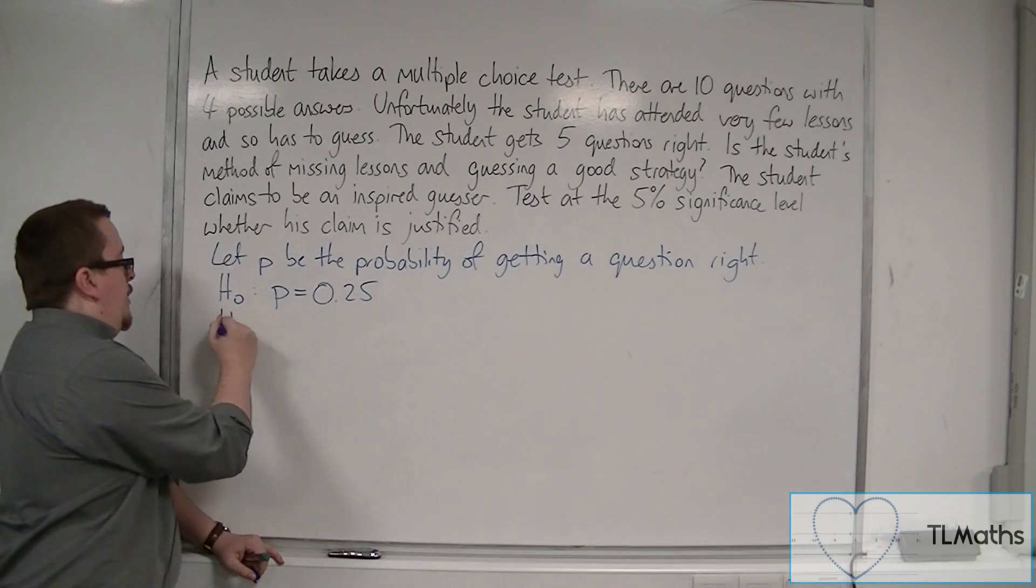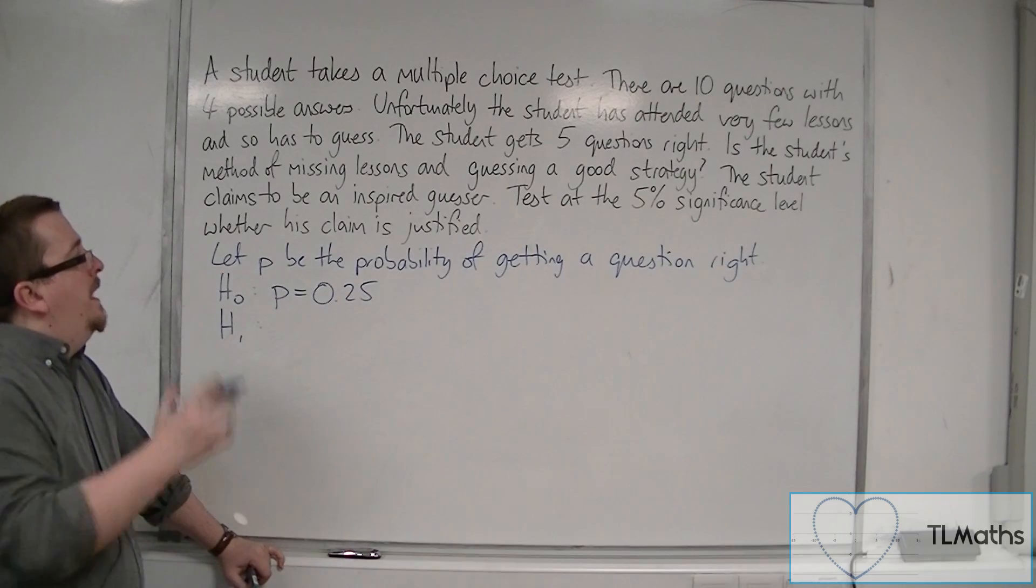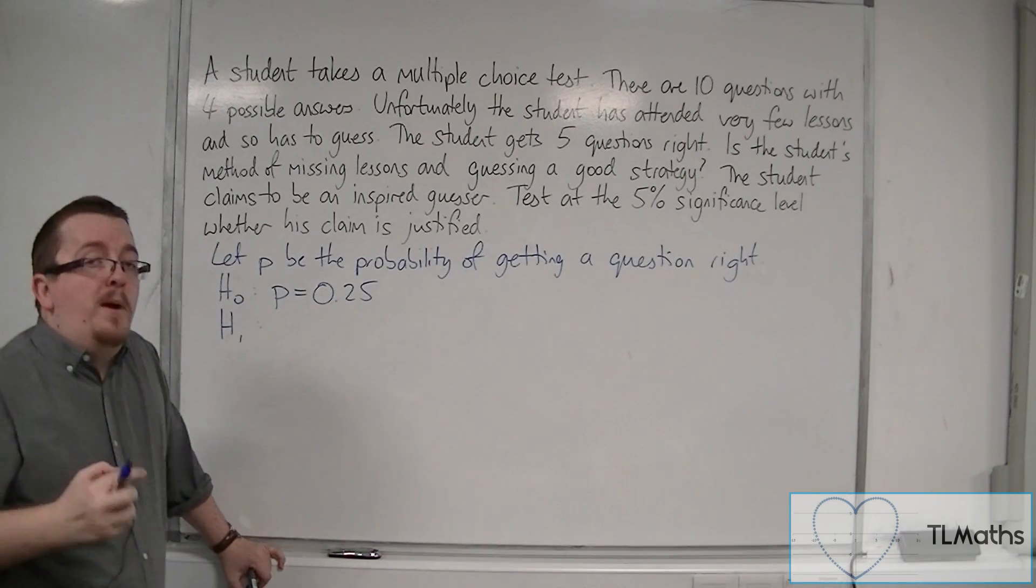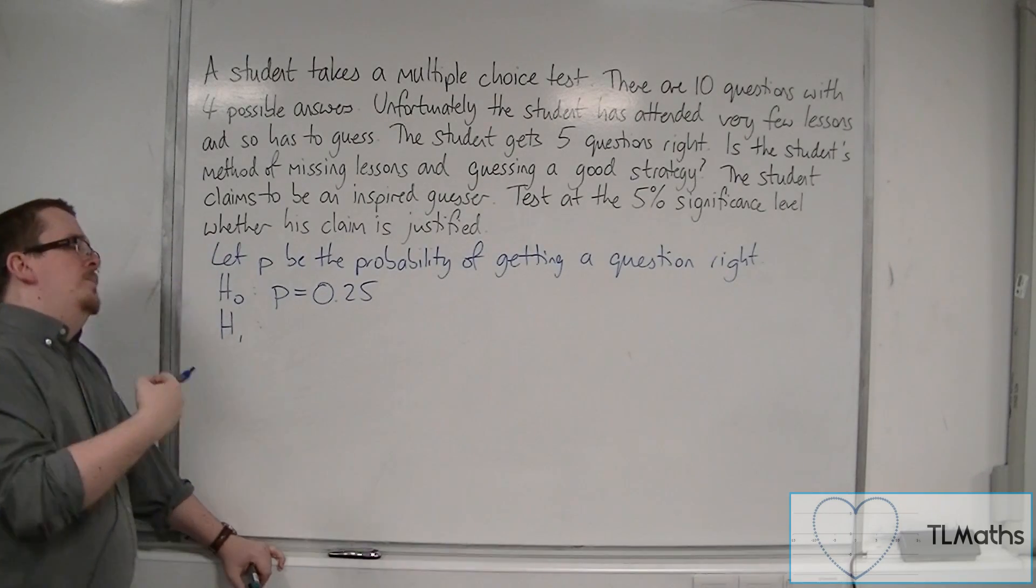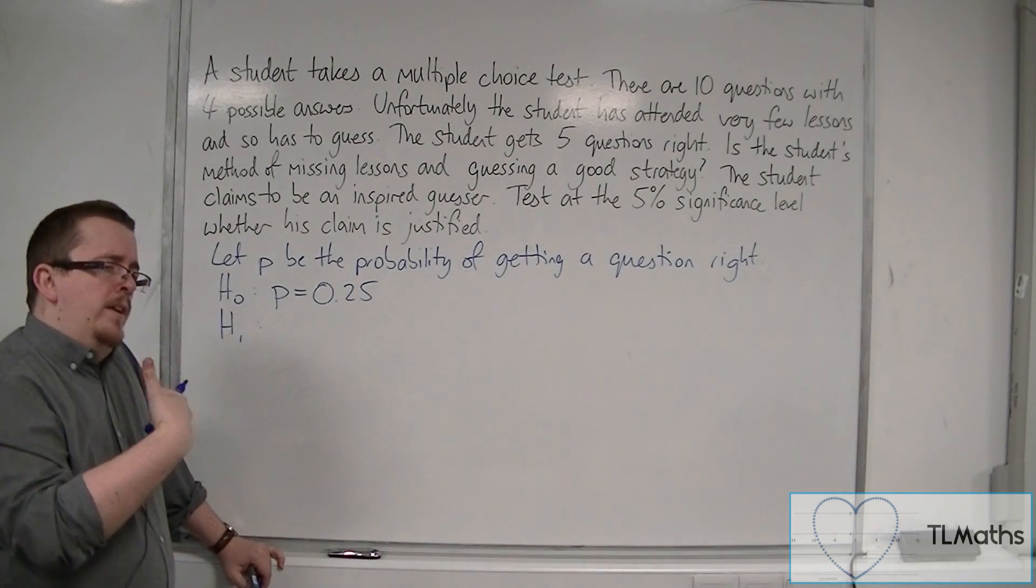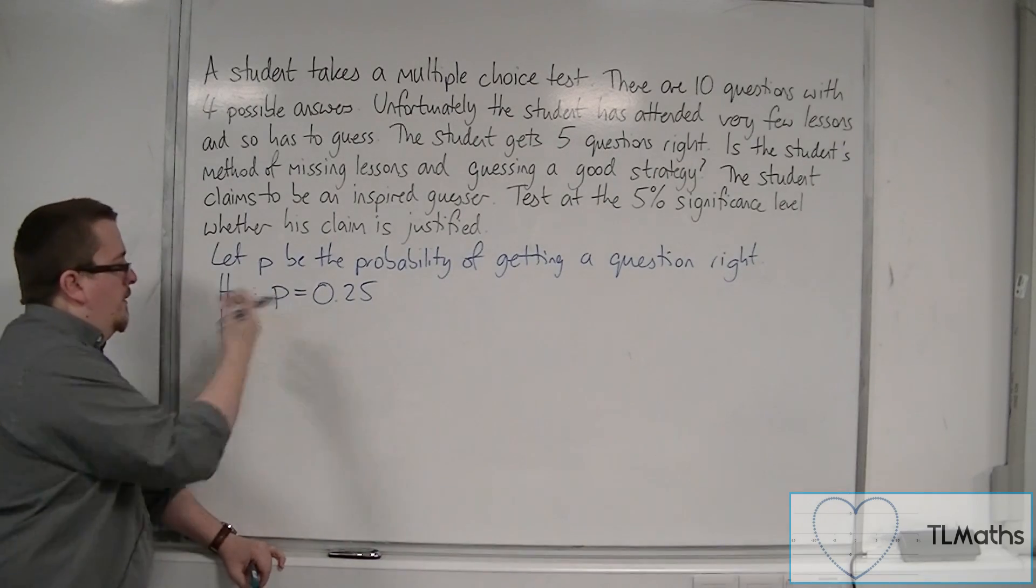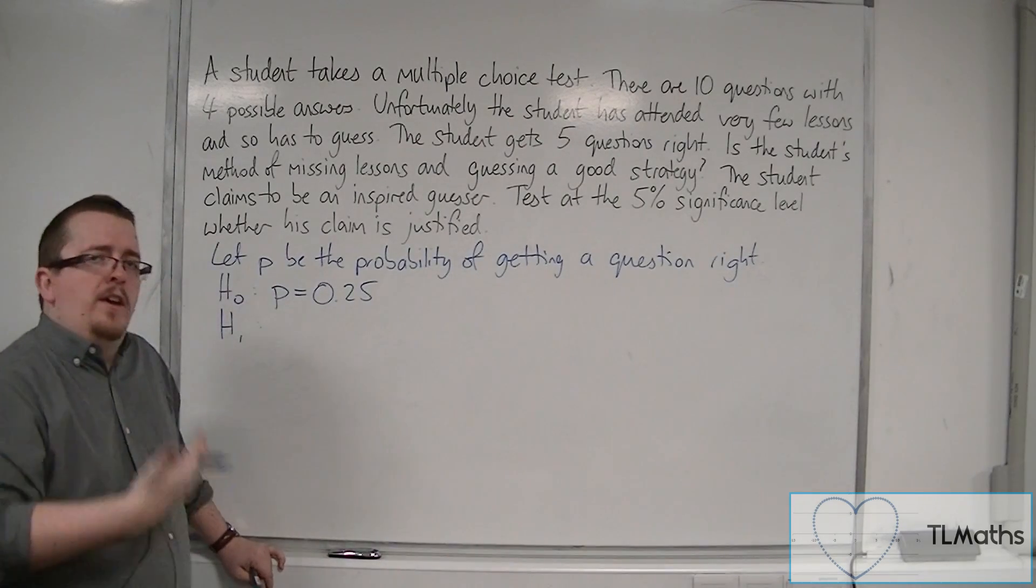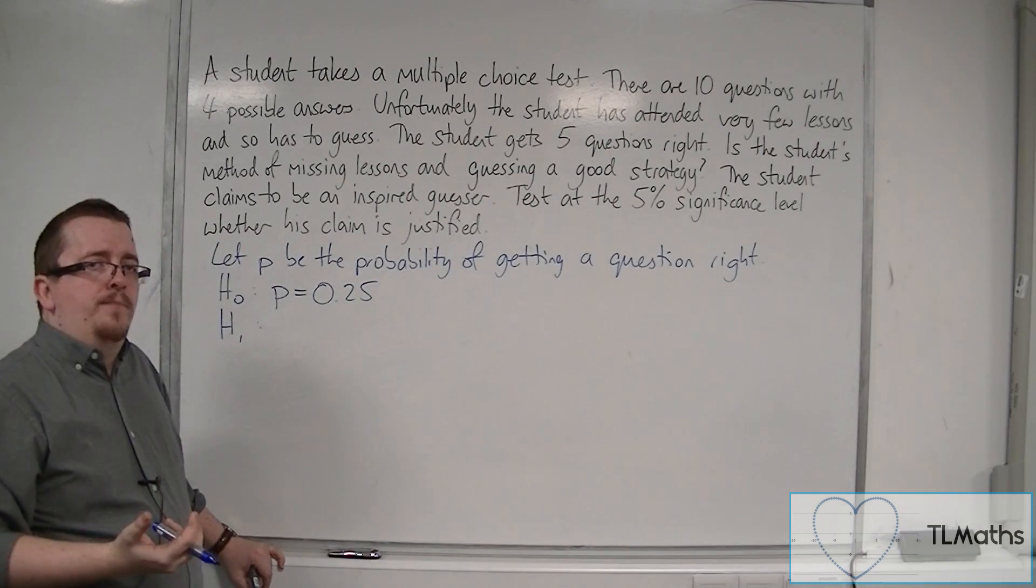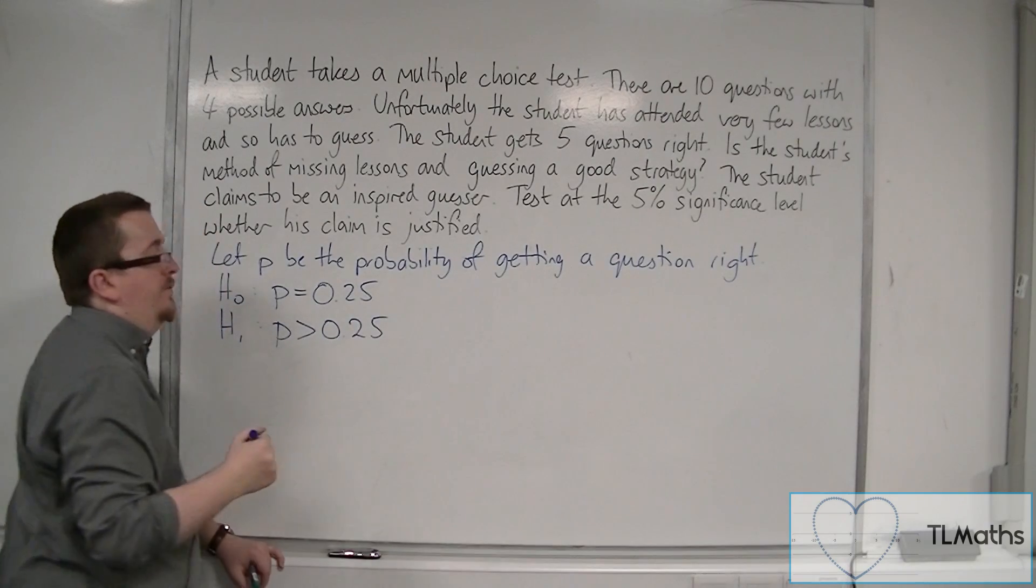H1, the alternative hypothesis. Well, the student believes that they're an inspired guesser. And so that would infer that they believe that they have a greater than a quarter chance of getting the question right. So they think that the probability is actually greater than 0.25.